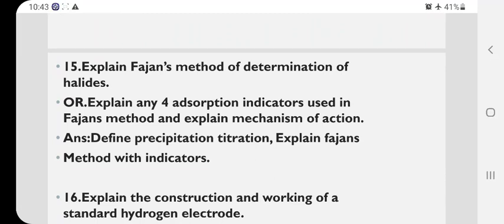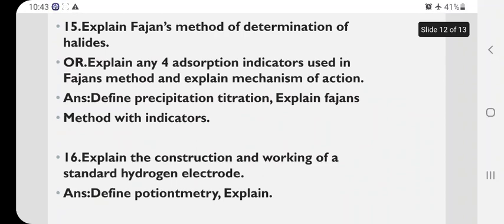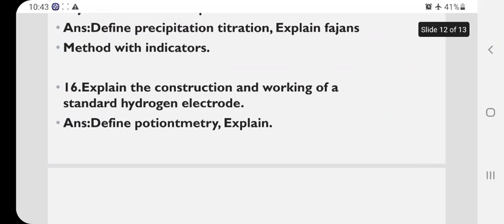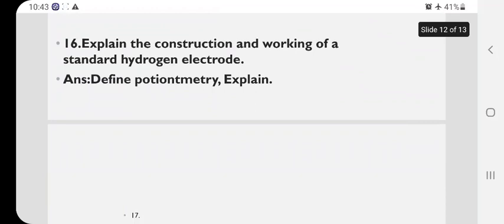Then, sometimes what they will ask in the year 2023 May question paper, they will ask this question. Explain any four adsorption indicators used in the Fajans method and explain the mechanism of action. Same, same indicator, adsorption indicators means same you have to write. Same what you wrote in Fajans method. Just you remember some of the indicators. You go through the Google, search there adsorption indicators. Write the example. Then define precipitation titration. Explain Fajans method with indicators. Same. Then explain the construction and working of standard hydrogen electrode. In here, you have to define potentiometry and explain.